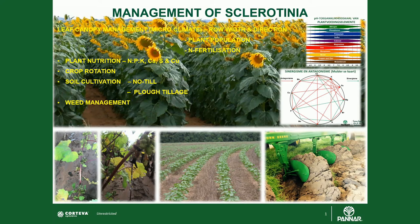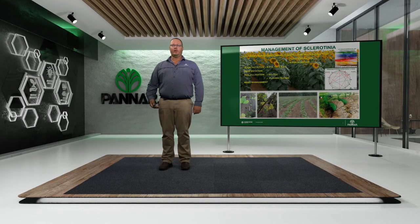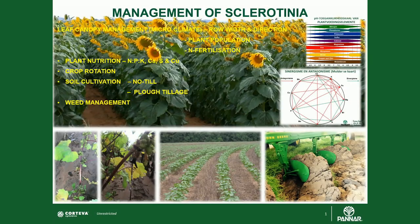Soil cultivation can be used to manage sclerotia carryover between seasons. With no-till, sclerotia remain on the soil surface as long as possible, exposed to varying temperatures and humidity, which affects their longevity. Alternatively, plough tillage can bury sclerotia deep enough that they cannot emerge and sporulate. However, if you plough again in the future, you will bring the sclerotia back to the surface.